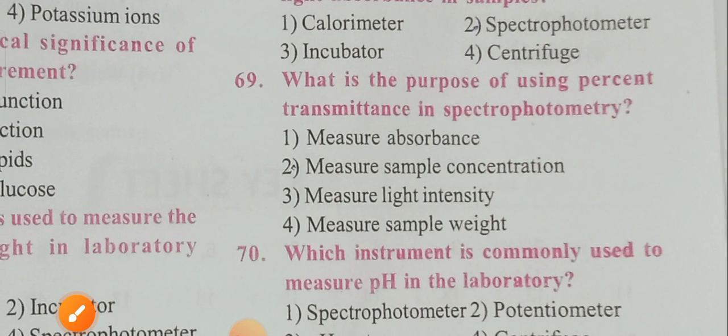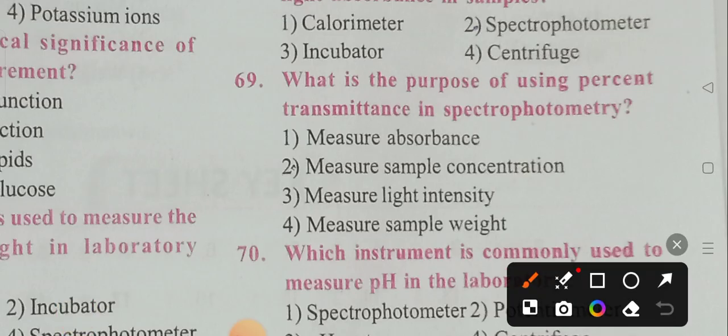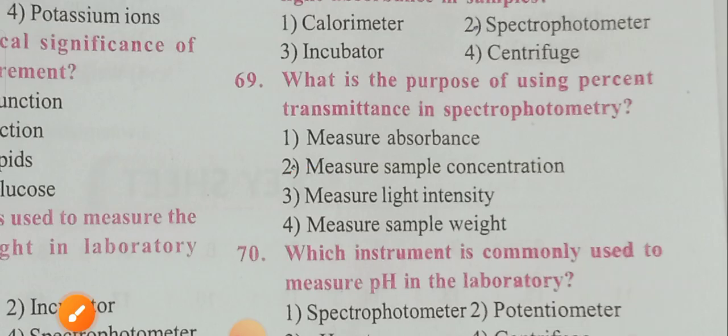Question 69: What is the purpose of using percentage transmittance in spectrophotometry? Options: measure absorbance, measure sample concentration, measure light intensity, measure sample weight. Option 2 is the correct answer — measure sample concentration.